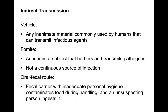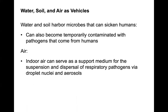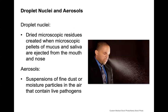Indirect transmission occurs through some type of vehicle or fomite. A vehicle is any inanimate material commonly used by humans that can transmit infectious agents. A fomite is an inanimate object that harbors and transmits pathogens but is not a continuous source of infection. Water, soil, and air can act as vehicles. Aerosolization through sneezing is another example of indirect transmission.